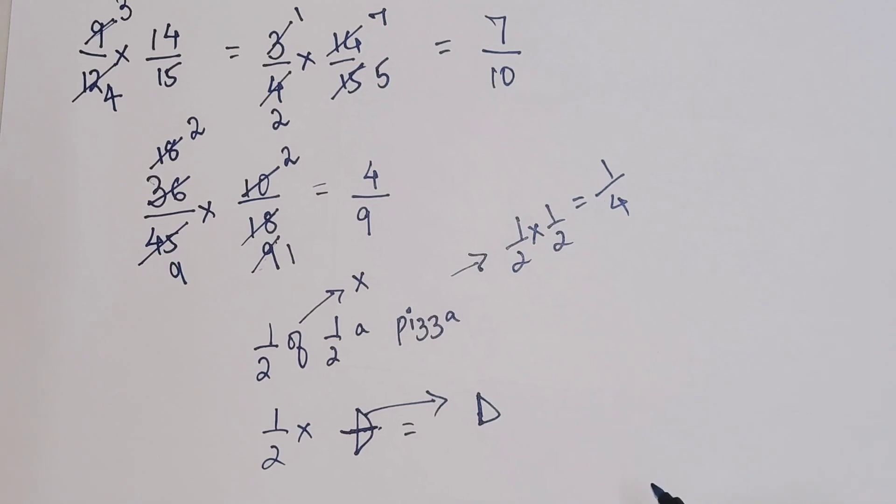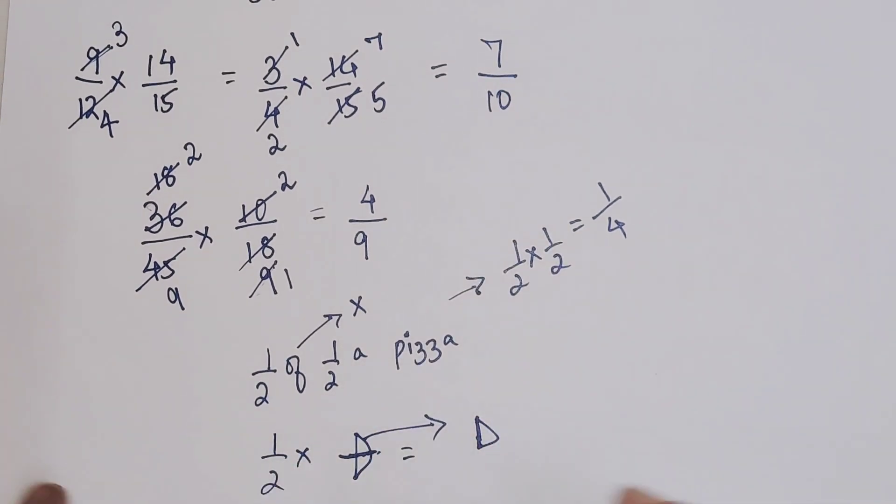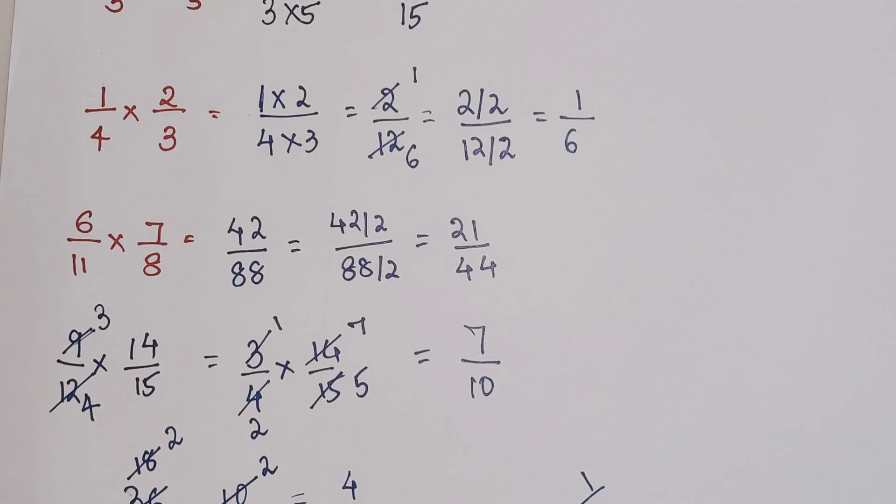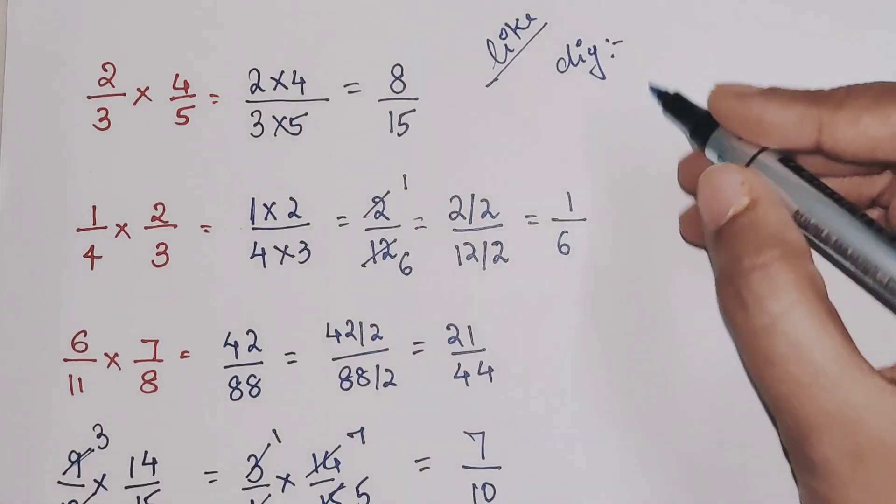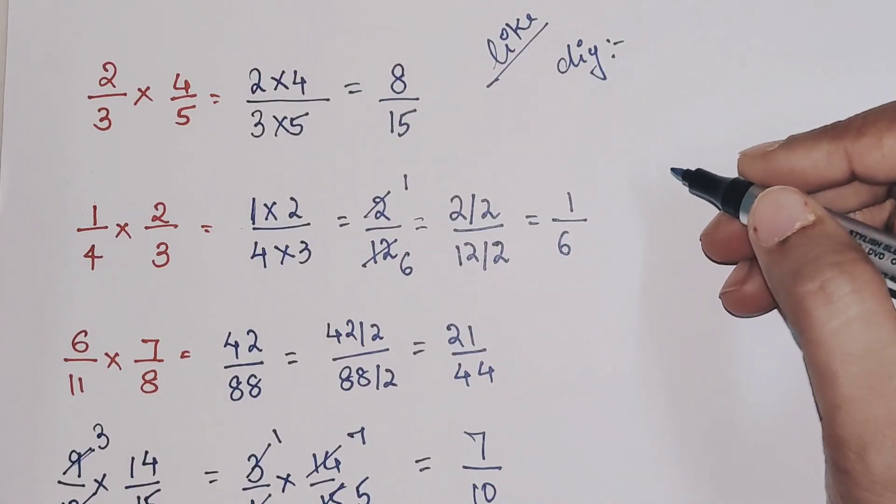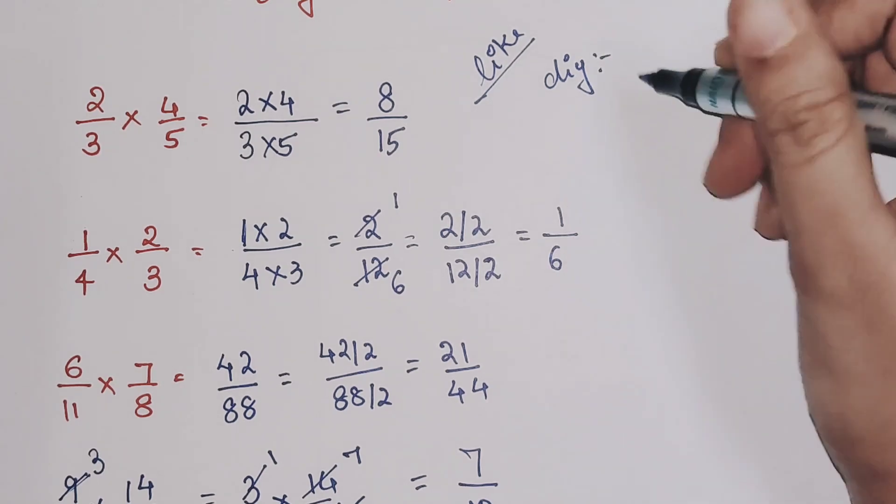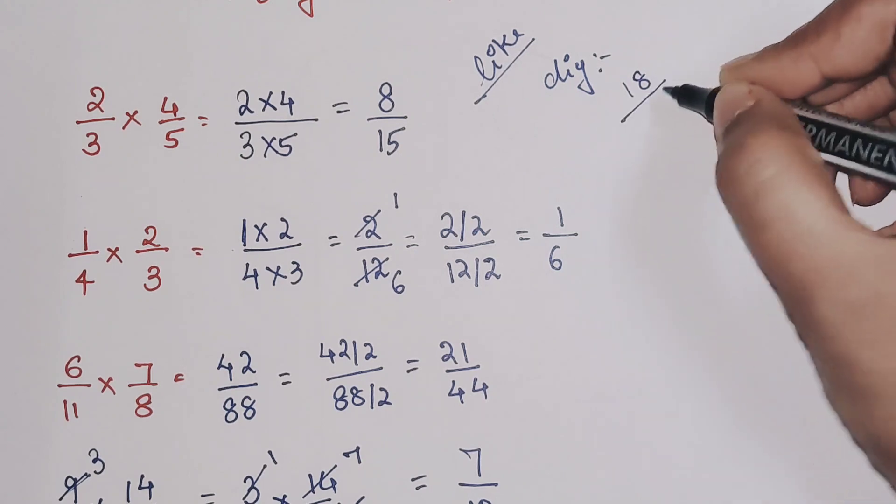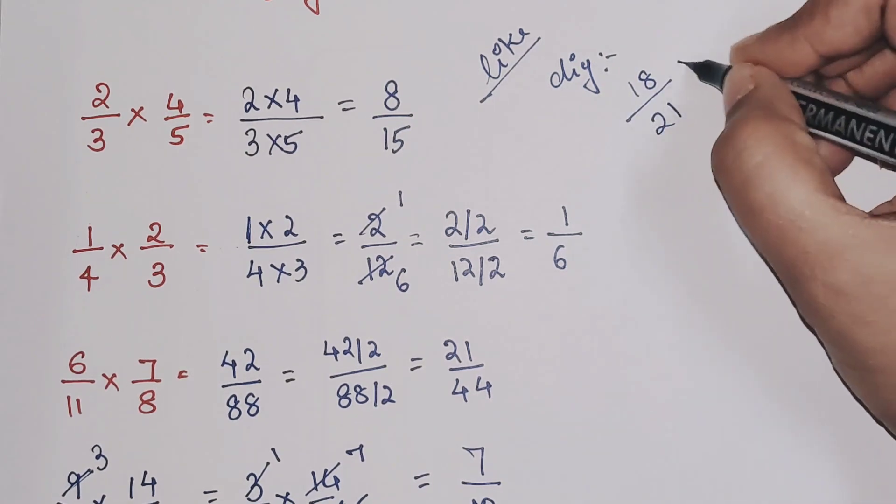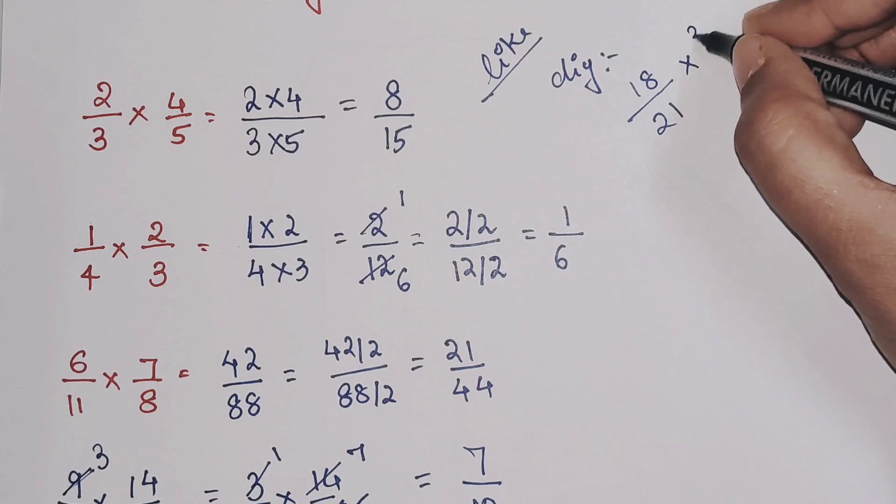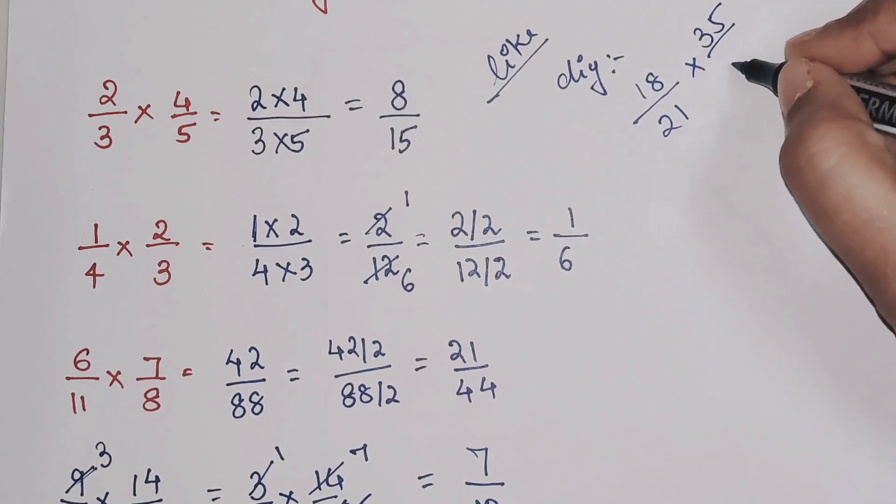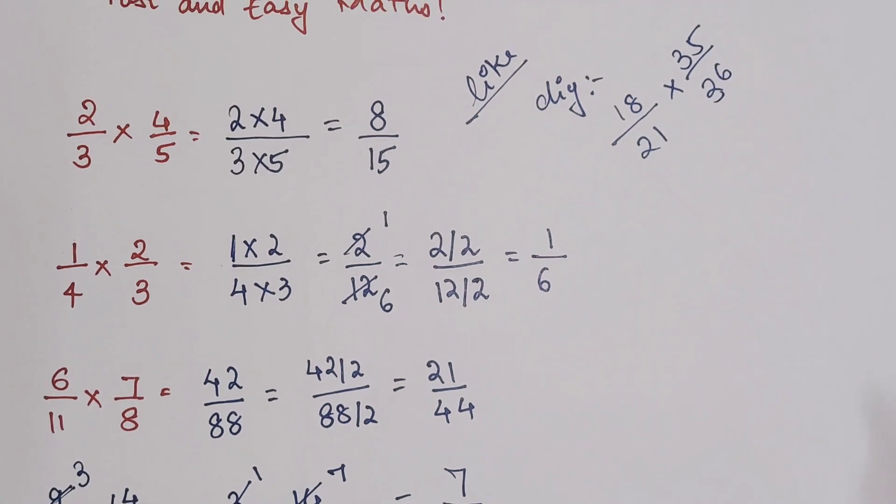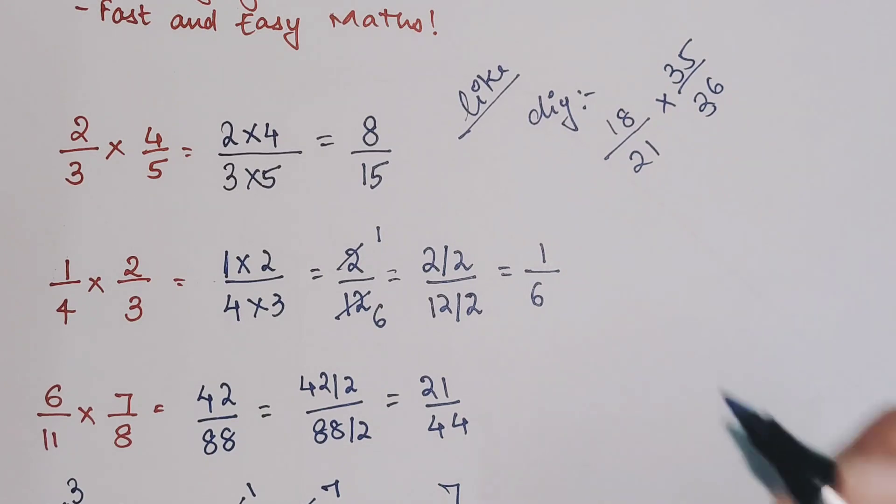I hope you all are understanding how to do these kind of tricks. So now coming to your DIY, you will have to let me know what is the answer for 18 upon 21 into 35 upon 36. Do let me know your answers in the comment section.